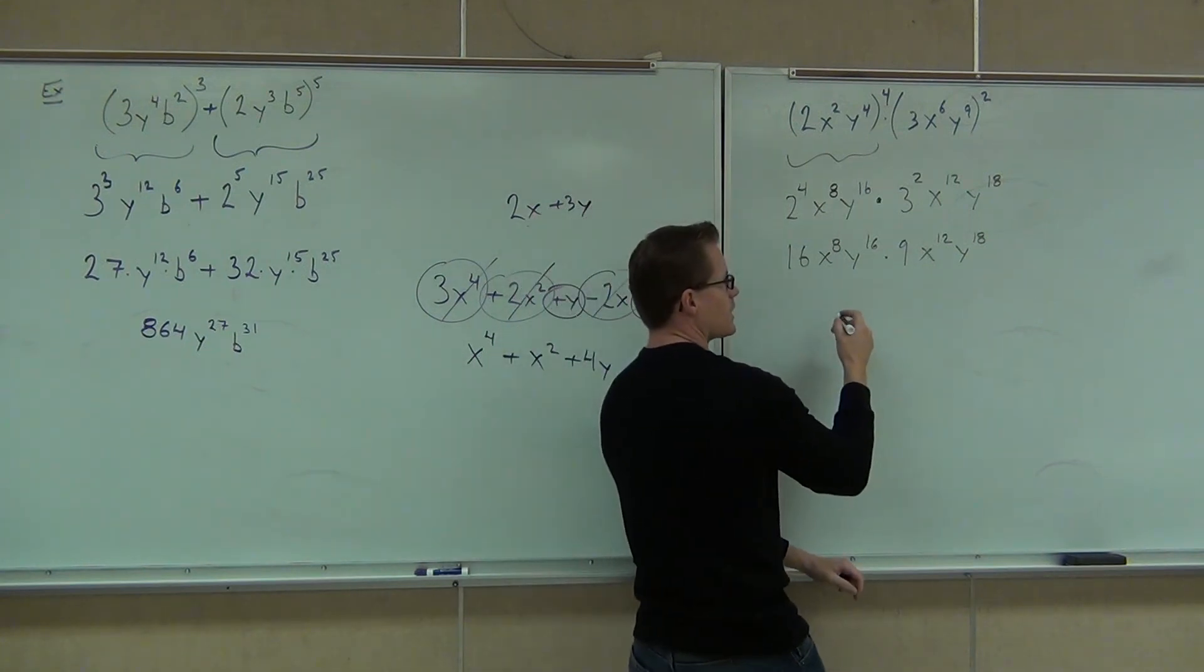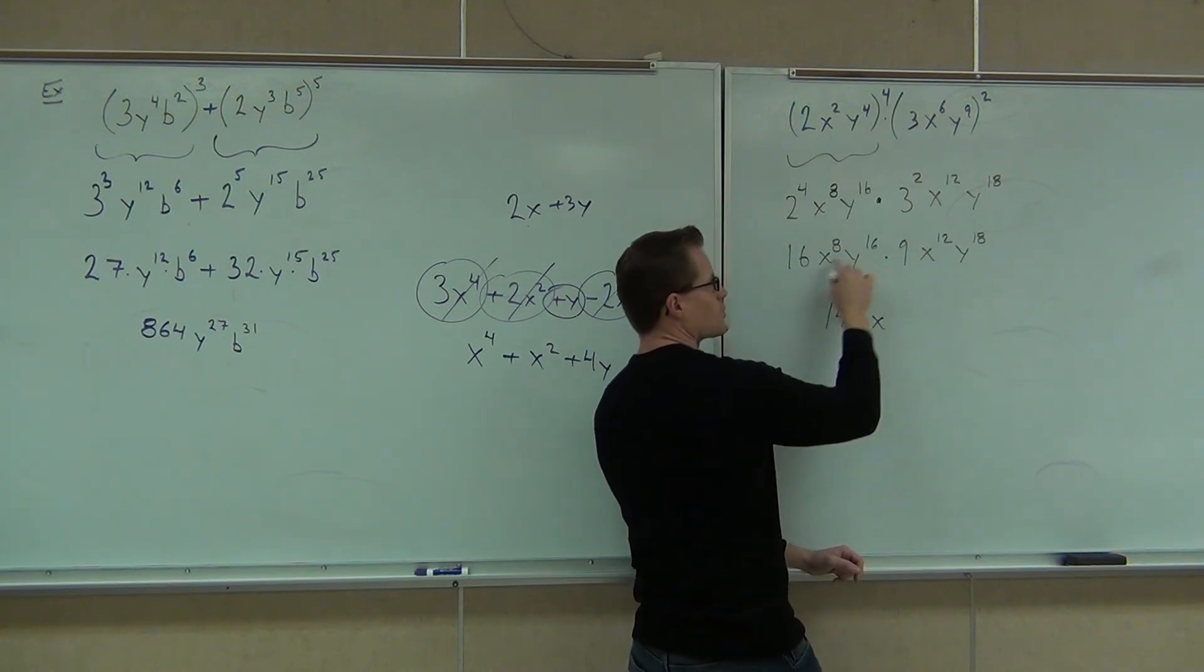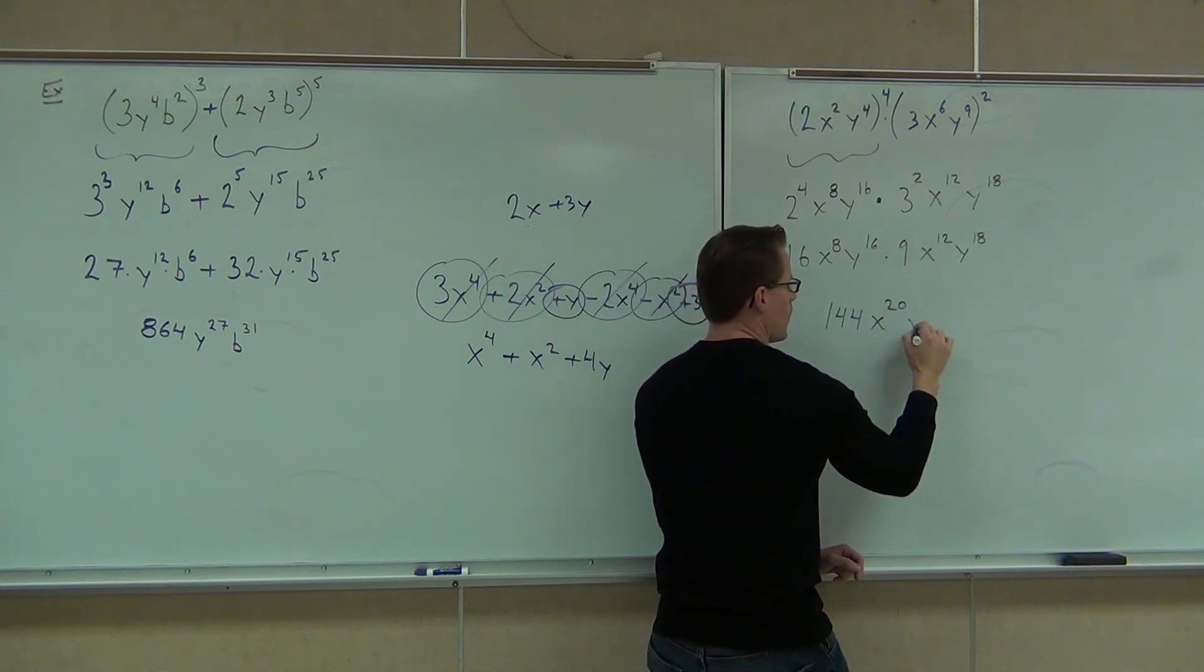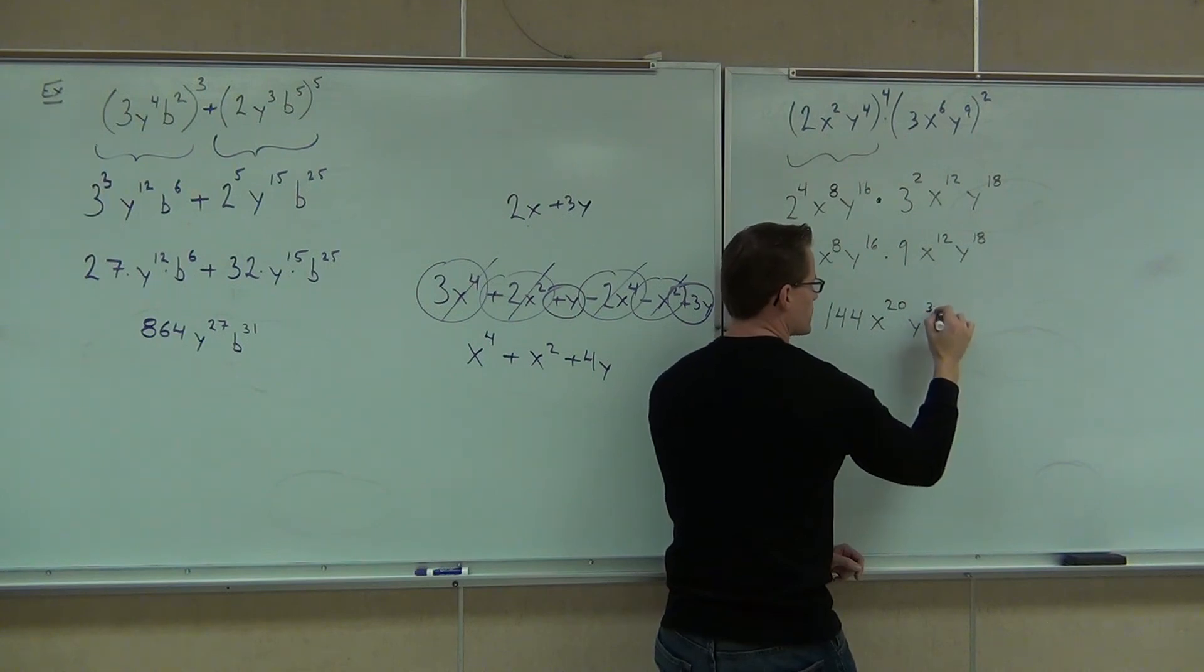Here, we're going to get 9 times 16. That's 144. We're going to get x to the 20, you're going to add those exponents. Y to the 34. That's it.